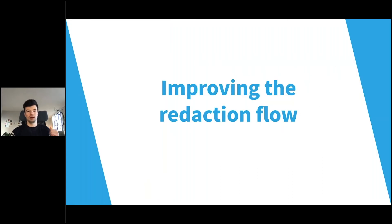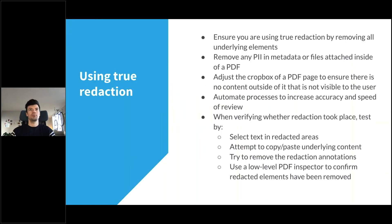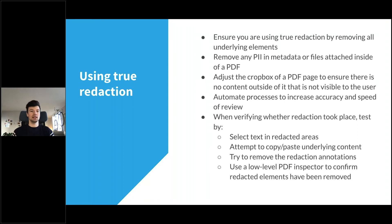Now let's talk about solutions — how we can improve the redaction flow. We want to ensure we use true redaction compliant with the PDF specification, removing all underlying elements — not just what we can see, but also what we cannot see. For example, there could be personally identifiable information inside metadata or files attached inside the PDF. You can have a PDF attached within a PDF within a PDF — so the trick is to remove any attachments to ensure there's no sensitive information in them, or recursively go through each one and remove it.